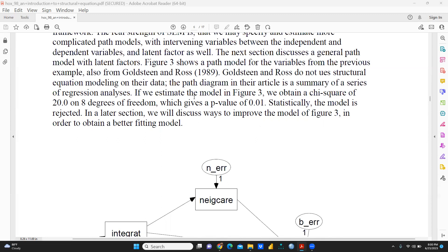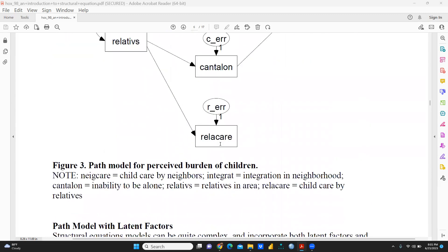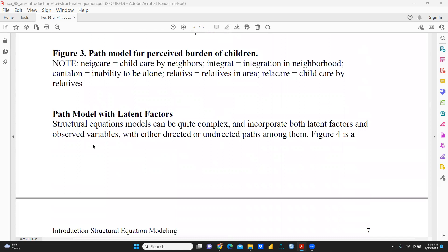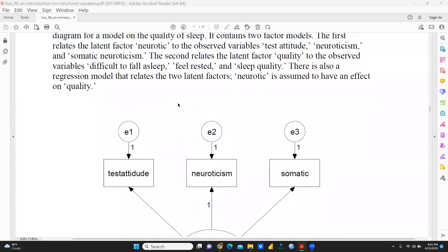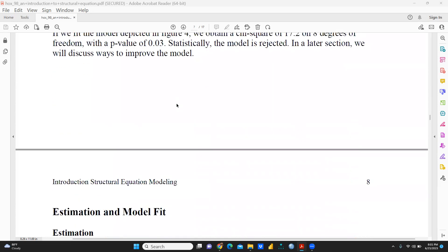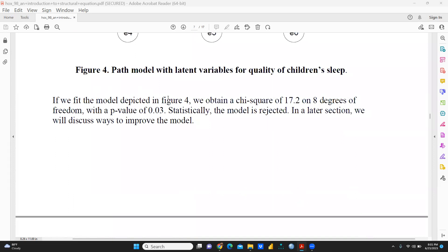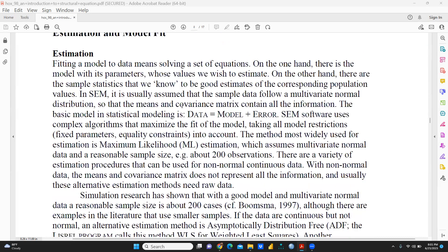Statistically, this model is rejected. In a later section, the author discusses ways to improve the model of Figure 3. In this model, it is rejected and how this model is improved. The path model with latent factors shows the methods through which they can improve this model. Statistically, this model is rejected. In a later section, the author discusses ways to improve this model: estimation and model fit.